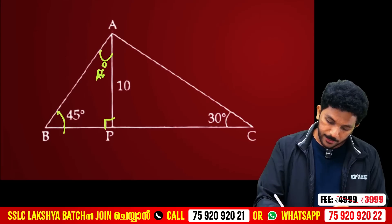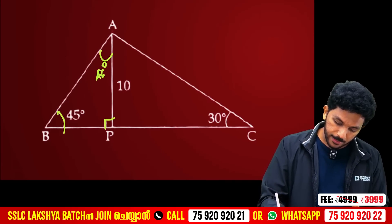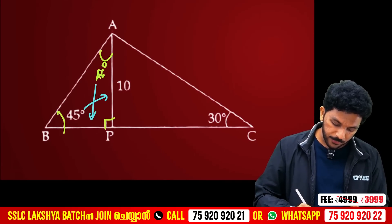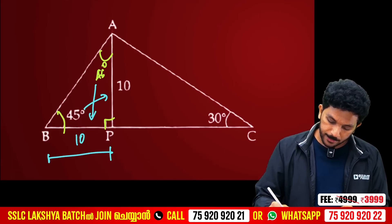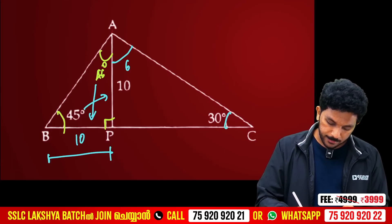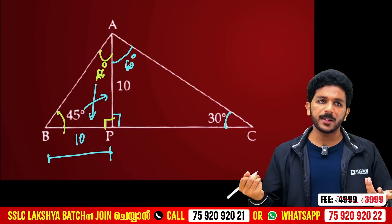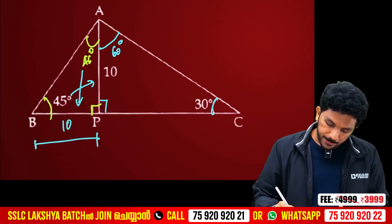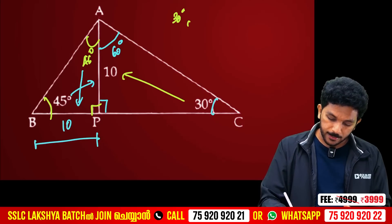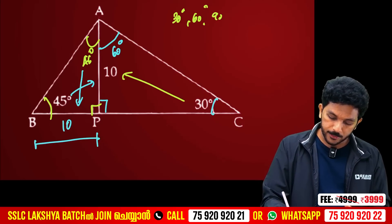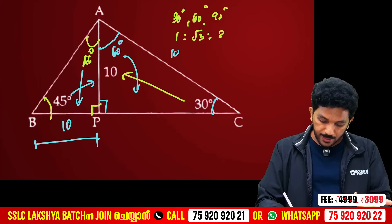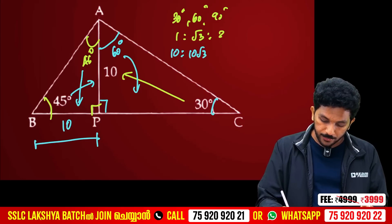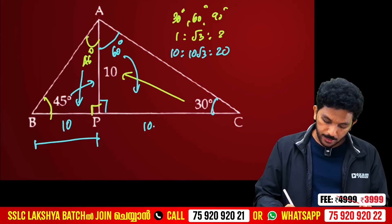We want to find the third side. With the 45-degree angle, the answer is 10. So BP is 10 centimeters. The remaining triangle has angles 30, 60, and 90. Counting the ratio 1:√3:2 from the 30-opposite side of 10, the 60-opposite is 10√3 and the 90-opposite is 20.